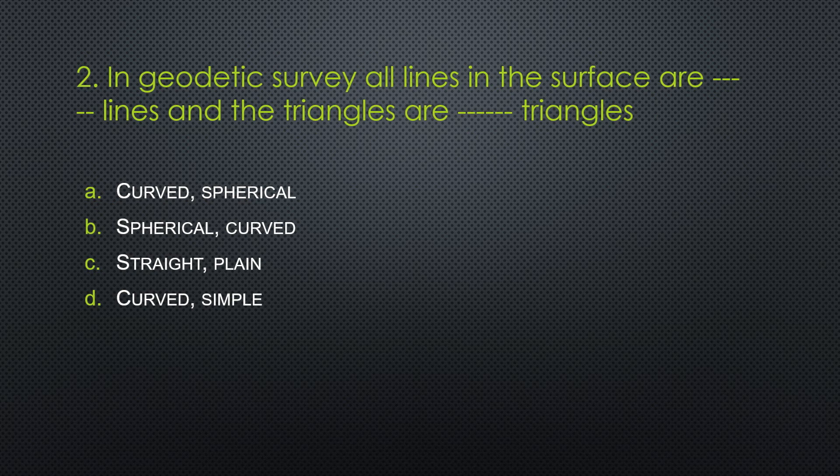Second question. In geodetic survey, all lines on the surface are blank lines and the triangles are blank triangles. Option A: curved, spherical. Option B: spherical, curved. Option C: straight, plain. Option D: curved, symbol.